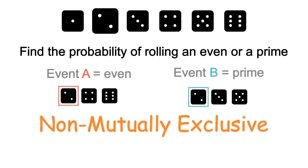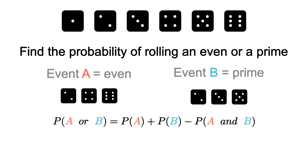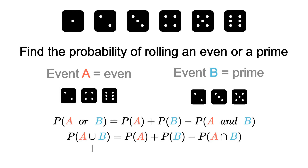When events share a common outcome and can possibly occur at the same time, we refer to these as non-mutually exclusive events. To calculate the probability of non-mutually exclusive events, we use the formula: the probability of A or B equals the probability of A plus the probability of B minus the probability of A and B. In set notation, this is written using the union symbol and the intersection symbol (the upside-down U). The probability of A intersect B represents all outcomes that both A and B have in common.